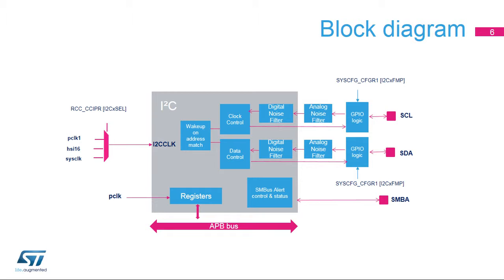Analog and digital noise filters are present on the SCL and SDA lines. A 20 mA driving capability is enabled using the control bits in the system configuration registers. In addition, an SMBus alert pin is available in SMBus mode.